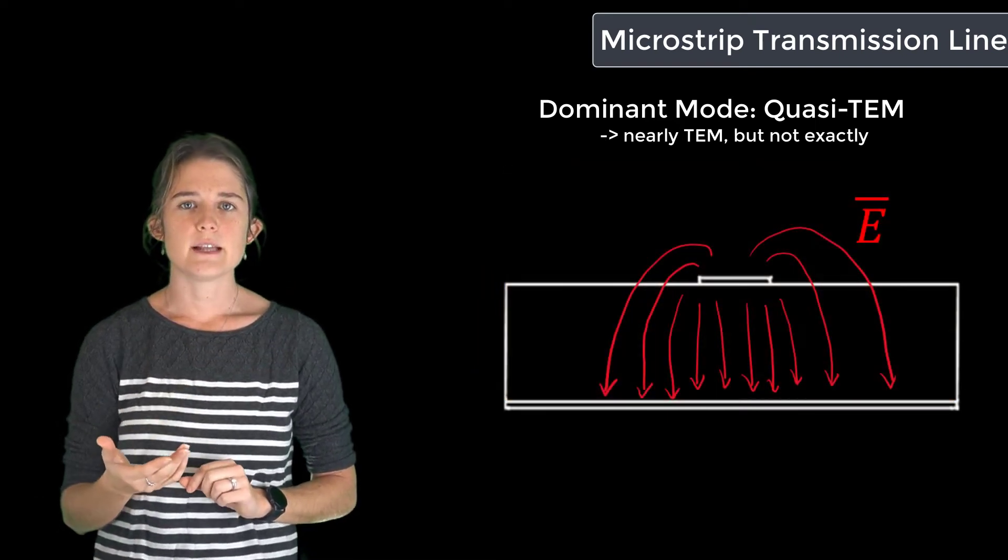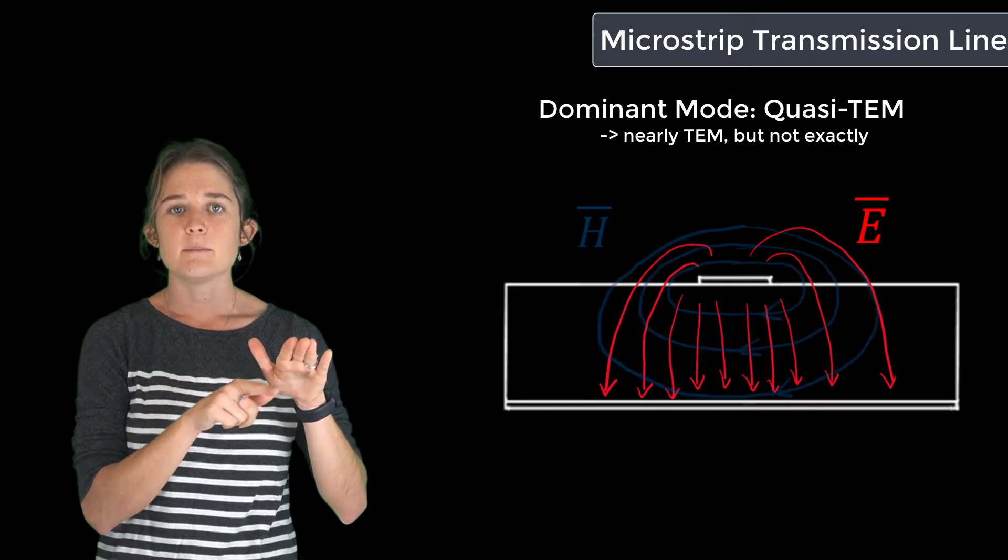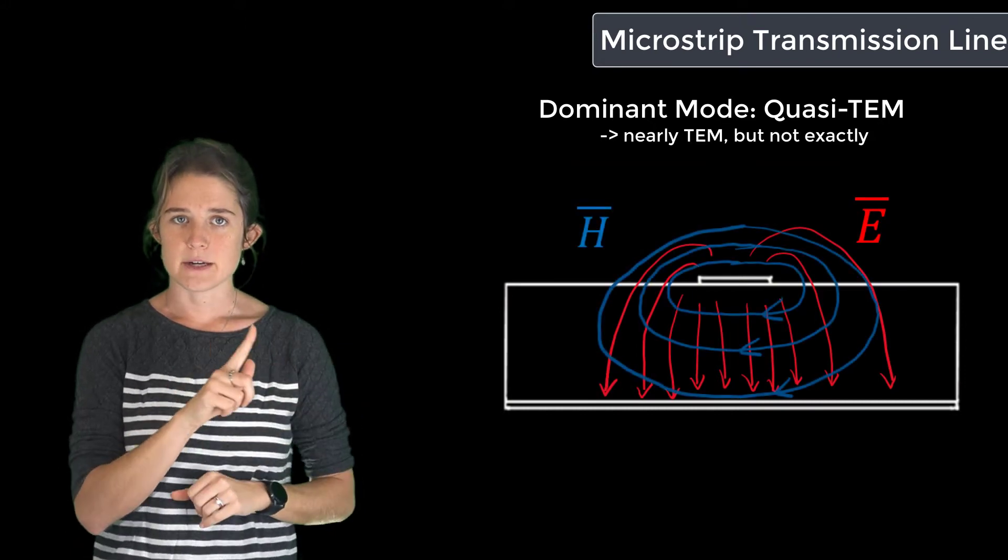For this mode, the electric fields will stretch between the two conductors, and the magnetic field will wrap around the top conductor.